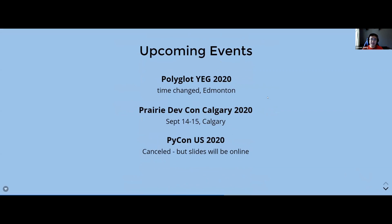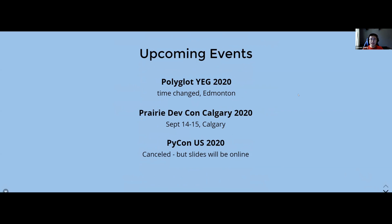Upcoming events: we don't have many right now. The Polyglot YEG doesn't have a time yet, and I'll keep it updated. The PyCon dev call is moved to September 14th and 15th — it was originally in March. PyCon US is cancelled; however, the organizing teams are making their best effort to put all the slides online and possibly having an online event. I'll keep you guys tuned.